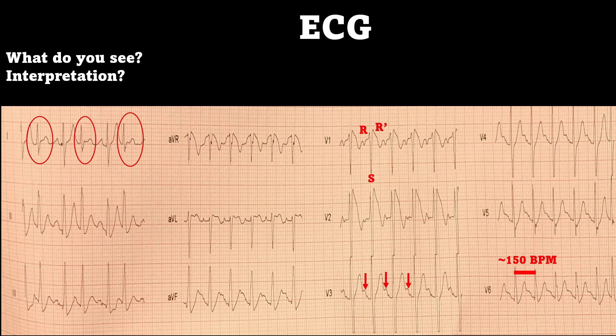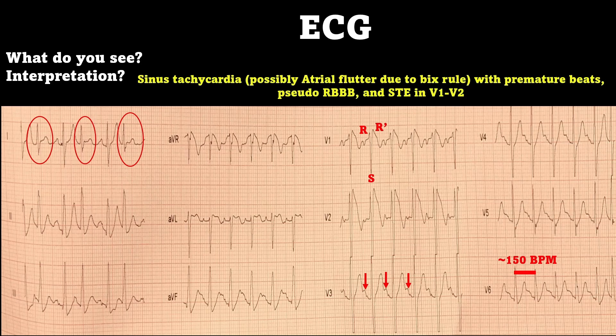It's probably a PJC because they're also a narrow complex premature beat. This is going to be a sinus tachycardia, but there's a possibility it could be a 2-to-1 atrial flutter due to the BICS rule. The BICS rule means there's atrial activity halfway between two QRS complexes, and possibly inside each QRS as well, which would coincide with a 2-to-1 flutter. Since this patient has a heart rate of 150, we could do a Lewis lead to confirm this.